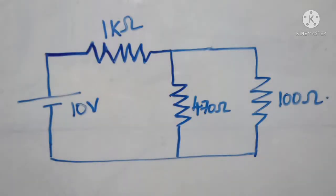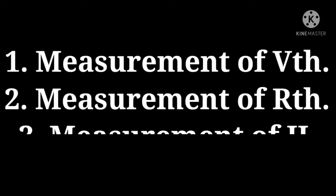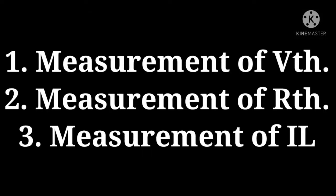This is the circuit which we are using to verify Thevenin's theorem. In this circuit, I want to find the current through the resistance of 100 ohms. Hence, we can call the 100 ohm resistor as a load resistor and the terminal across which it is connected as load terminals. This experiment involves three steps: measurement of Vth, measurement of Rth, and measurement of load current.